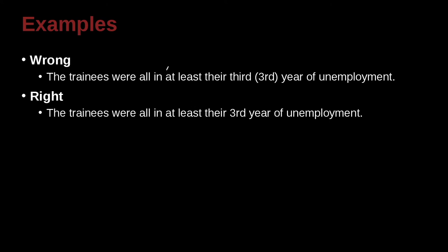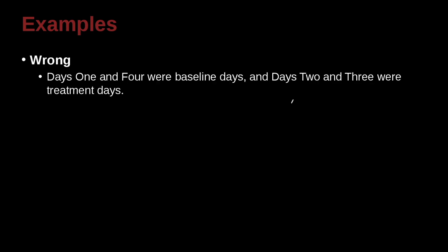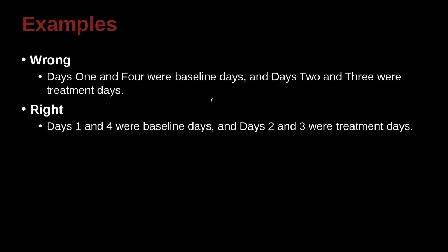The trainees were all in at least their third year of unemployment — here you can write it as the numeral 3, because it's in a series. Days 1 and 4 were baseline days, and days 2 and 3 were treatment days. We're tempted to spell them out, but we don't want to do that because even though they're less than 10, they're in a series and we're comparing them together. When you have a series of numbers inside a sentence, you write them as numerals.